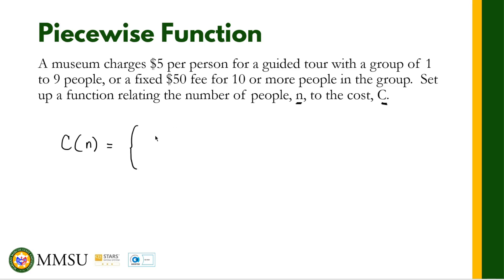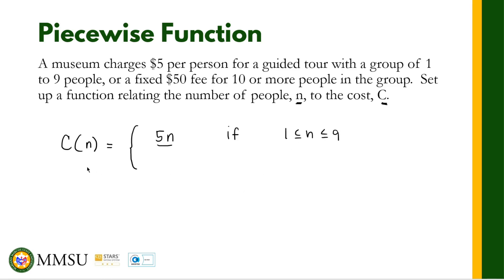We have two functions here. For the first piece, that is when n is between 1 and 9, the cost is $5 per person, so that's 5n. The price is 5 times n if there are 1 to 9 people. So this is our first domain: n is greater than or equal to 1 and less than or equal to 9. When the number of people is within this range, we use this formula to find the cost.